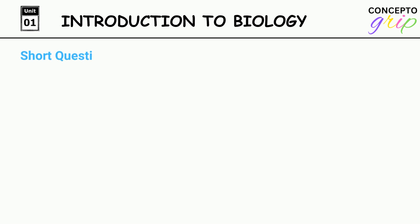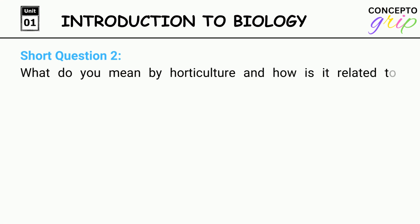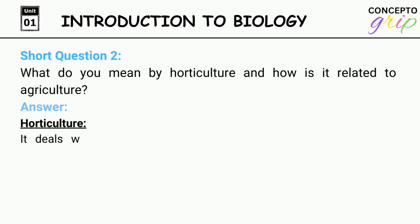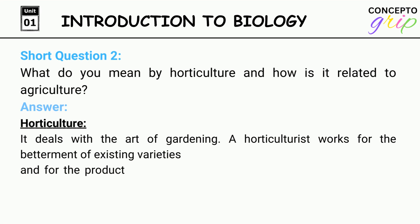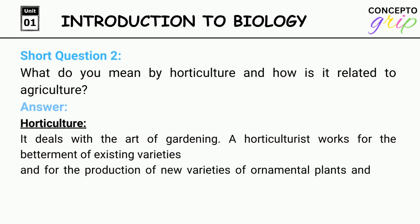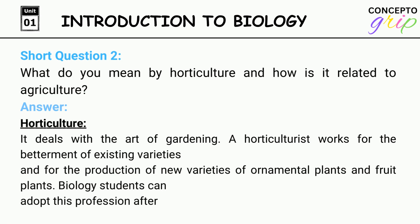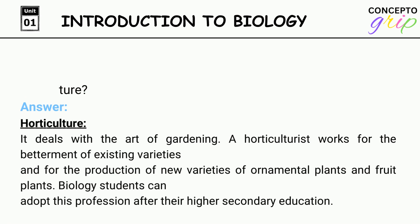Short question 2: What do you mean by horticulture and how is it related to agriculture? Answer. Horticulture deals with the art of gardening. A horticulturist works for the betterment of existing varieties and for the production of new varieties of ornamental plants and fruit plants. Biology students can adopt this profession after their higher secondary education.